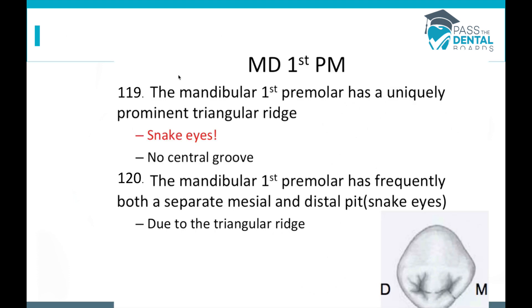Moving to the mandibular first premolar: it has a uniquely prominent triangular ridge. Looking at the picture, there's a big triangular ridge going across, resulting in a unique anatomical feature called snake eyes — two pits on either side of the large prominent triangular ridge. This tooth has no central groove because it's interrupted by that large triangular ridge, and it very frequently has a separate mesial and distal pit.